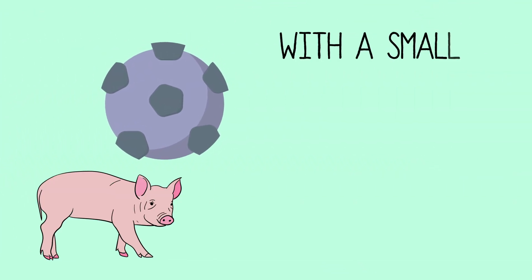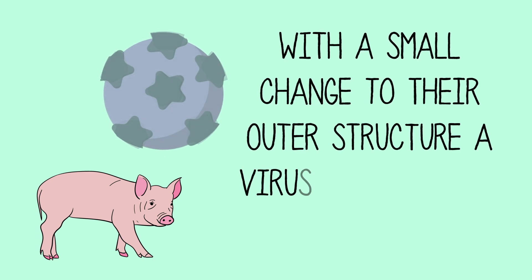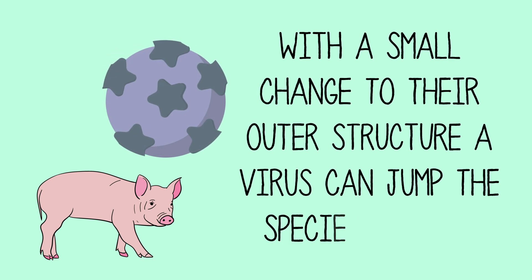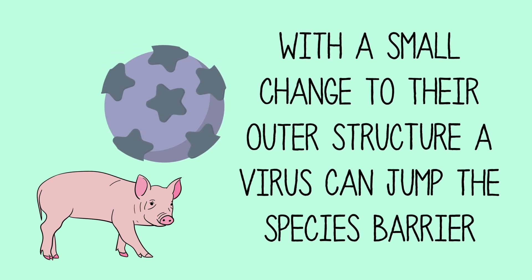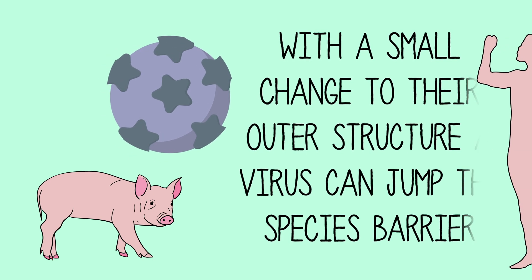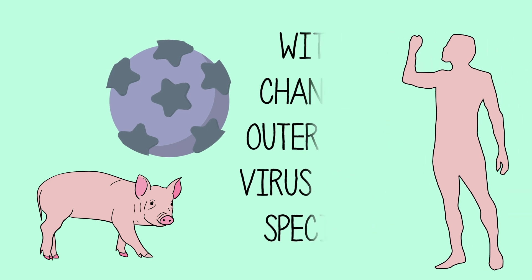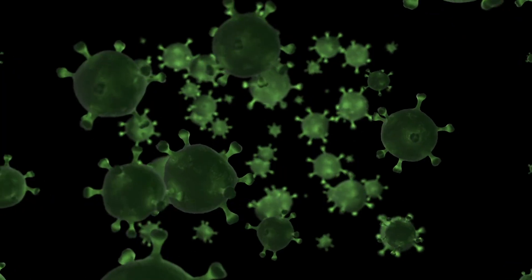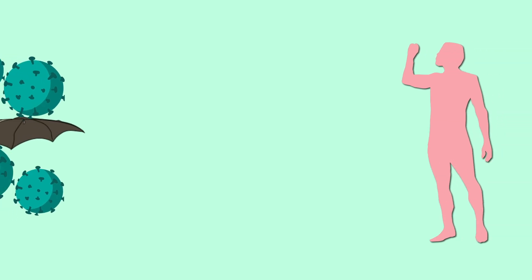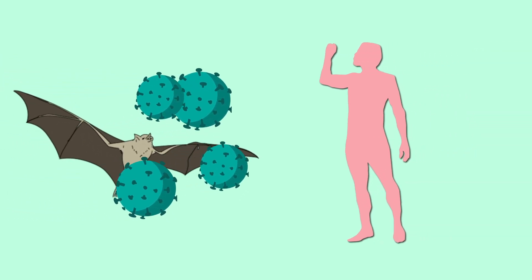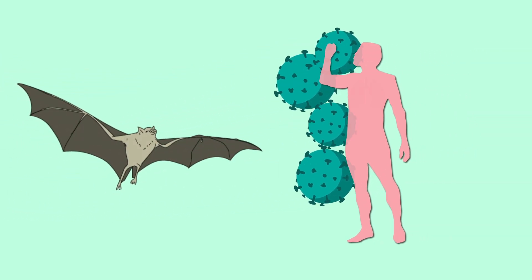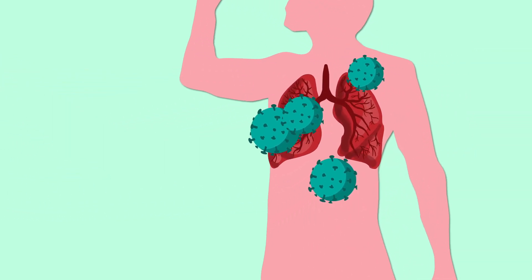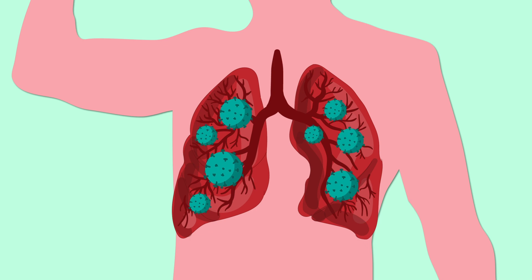Occasionally, some viruses switch. With a small change to their outer structure, a virus can jump the species barrier. Ones that once affected just animals can suddenly start infecting humans too. Scientists think this is how coronavirus came to infect humans in the first place, jumping from an animal like a bat. Now it targets the cells in our lungs.